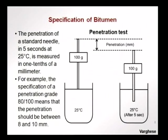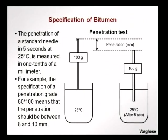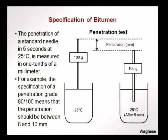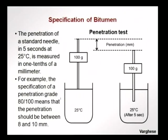The penetration test is conducted with a recipient containing bitumen maintained at 25 degrees Celsius. A needle of a certain weight is allowed to penetrate during 5 seconds into the bitumen surface, and the penetration is registered in tenths of a millimetre. So, if you have a penetration grade of 80–100, that means the penetration in this test should be between 8 and 10 millimetres.